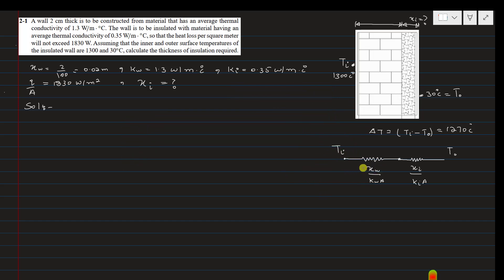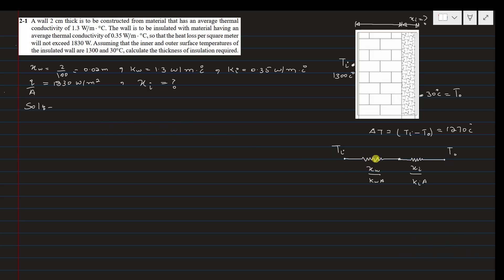If you don't understand, let me know in the comment section and I will make a separate video on it. Higher resistance means lower heat transfer. In the case of insulation, if you want to keep the resistance to heat transfer higher, the insulation must be thicker. The heat transfer equals the temperature difference Ti minus T0, which is 1,270°C, divided by the total resistance.